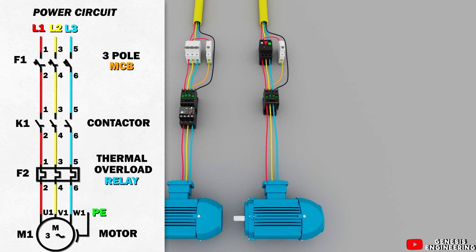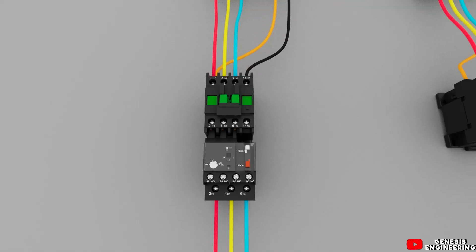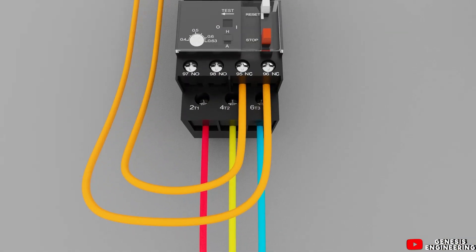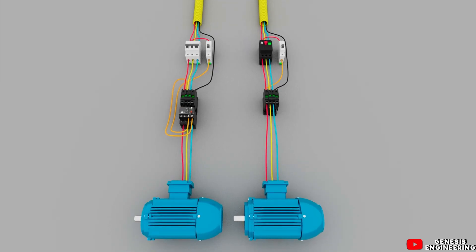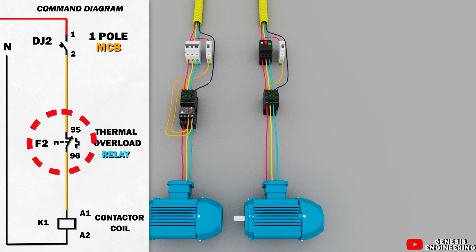The power contacts of the thermal relay are only connected to the contactor, so you must use the auxiliary contacts of the thermal relay to turn off the motor when there is an overload. We take one of the phases connecting to the contactor coil and connect it to the normally closed contact of the thermal relay — terminal 95 is the normally closed input and terminal 96 is the output. We connect this phase to 95 and leave from 96 to A1 of the contactor. Now in the command diagram we have the normally closed contact of the thermal relay in series with the contactor coil, and if there is an overload, this normally closed contact will open, interrupt the coil energy, and turn off the motor.